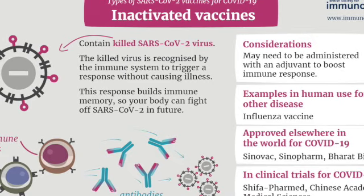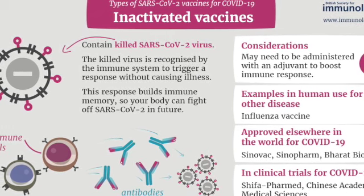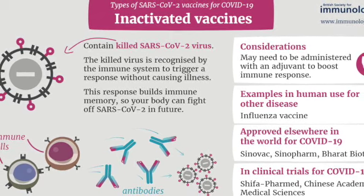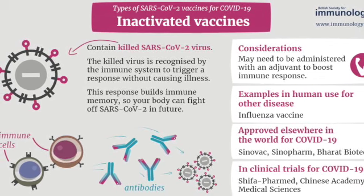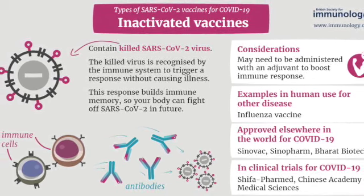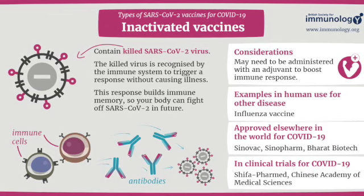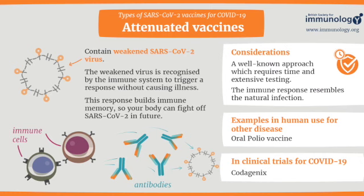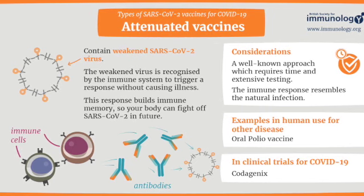Inactivated vaccines use the killed version of the germ that causes a disease. Inactivated vaccines usually don't provide immunity protection that's as strong as live vaccines, so you may need several doses over time — booster shots — in order to get ongoing immunity against diseases. Inactivated vaccines are used to protect against hepatitis A, flu, polio, and rabies.